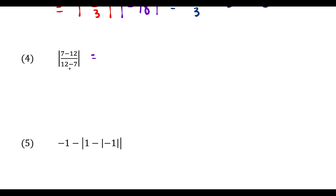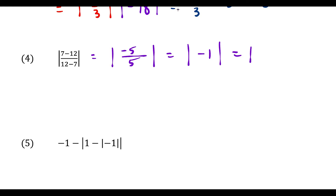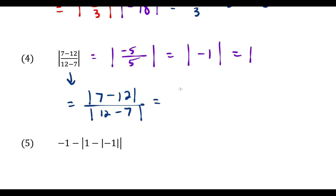The fastest way to do this one is to simplify: seven minus twelve is negative five, and twelve minus seven is positive five, so we have absolute value of negative five over five, which is negative one. The absolute value of negative one is positive one. But to see the properties, we can also write it as the absolute value of seven minus twelve divided by the absolute value of twelve minus seven — that's absolute value of negative five over absolute value of five, which is five divided by five, also equal to one.